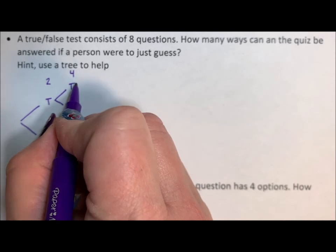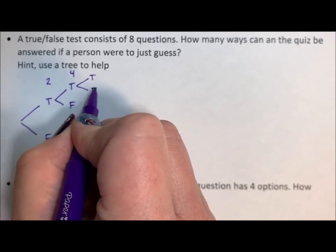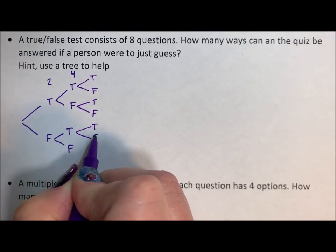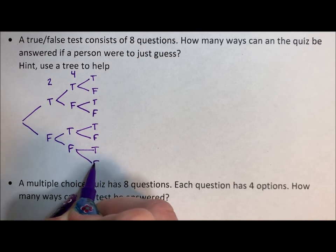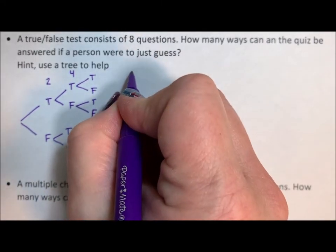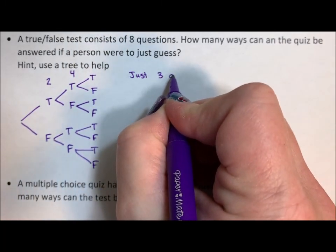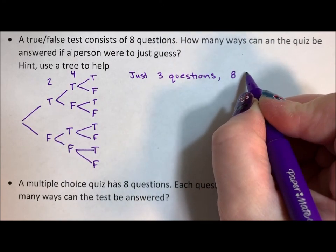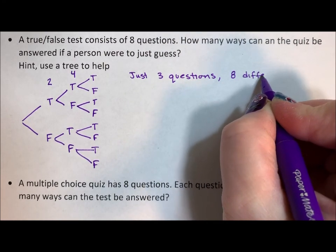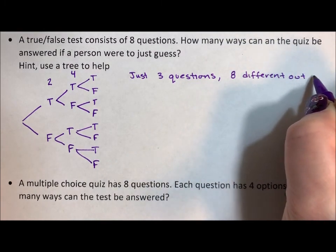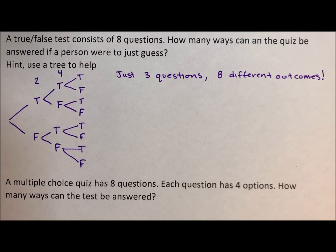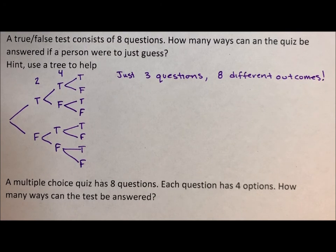So next, if there was a third question, again, true, false, true, false, true, false. So now if this were just three questions instead of eight, there would be eight different outcomes. That's with just three questions, but this isn't a three question quiz. This is an eight question quiz.